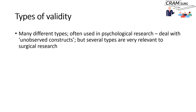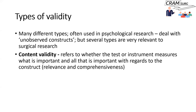There are lots of different types of validity, often used in psychological research dealing with unobserved or abstract constructs. In surgical research, we tend to have defined, observable outcomes, but several types of validity remain very relevant. The first type is content validity, which refers to whether the test or instrument measures what is important and whether it measures everything that is important with regards to the concept — referred to as relevance and comprehensiveness.